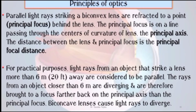Parallel light rays striking a biconvex lens are refracted to a point behind the lens called the principal focus. The principal focus lies on the principal axis, a line passing through the center of curvature of the lens. The distance between the lens and the principal focus is called the principal focal distance. In practical terms, light rays from an object more than 6 meters or 20 feet away are considered parallel, while rays from objects closer than 6 meters are divergent and are brought to a focus farther back on the principal axis. A concave lens causes light rays to diverge.